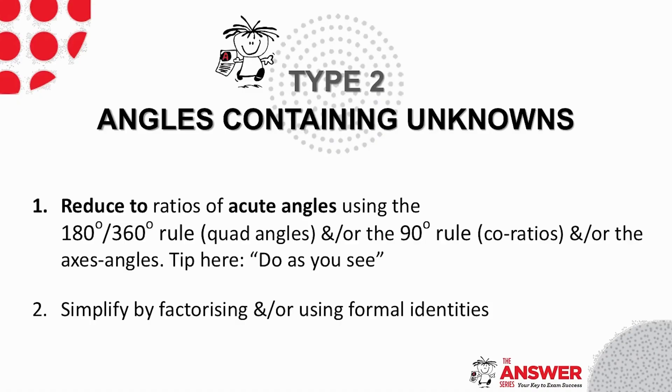If we look now at the type two situation where the angles contain unknowns, there are only two steps to follow here. The first is to reduce according to what you see.